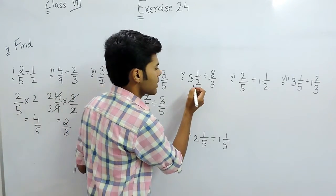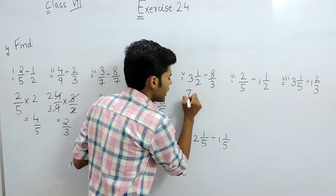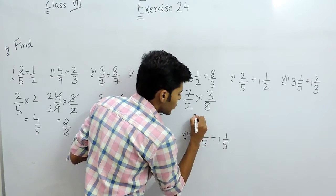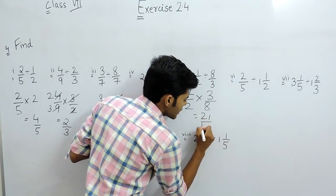Now, in the 5th part also we will do the same thing, that will be, I am writing it directly 7 by 2 multiplied with 3 by 8 and the answer will be 21 by 16.